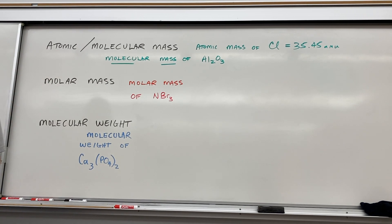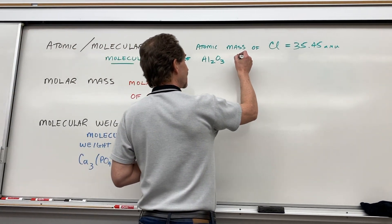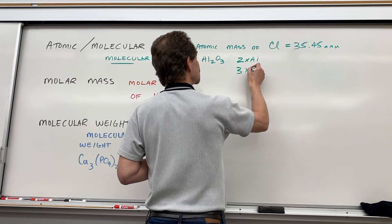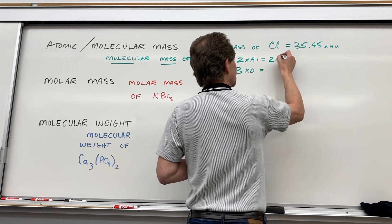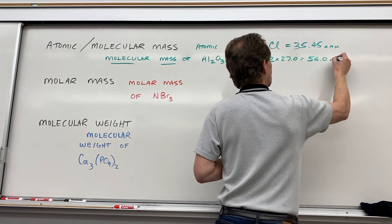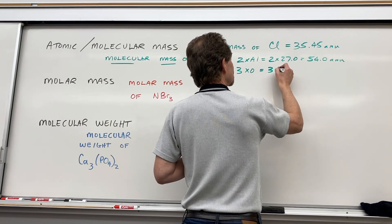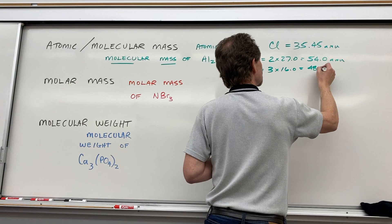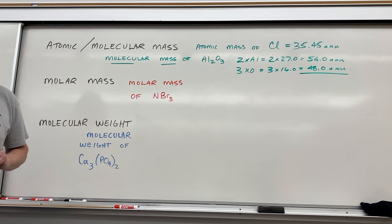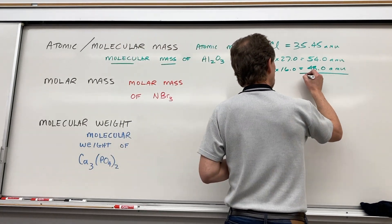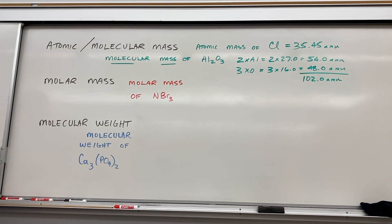If I want the molecular mass of aluminum oxide, I have a little bit more work to do, but the process is the same. I need two aluminums and three oxygens, and pull those numbers off the periodic table. So 2 times 27 is 54 atomic mass units — that is the contribution of aluminum to aluminum oxide. Three times 16 for oxygen gives me 48 atomic mass units — that is the contribution of oxygen. Add them up: 102.0 atomic mass units. That is the molecular mass of aluminum oxide.